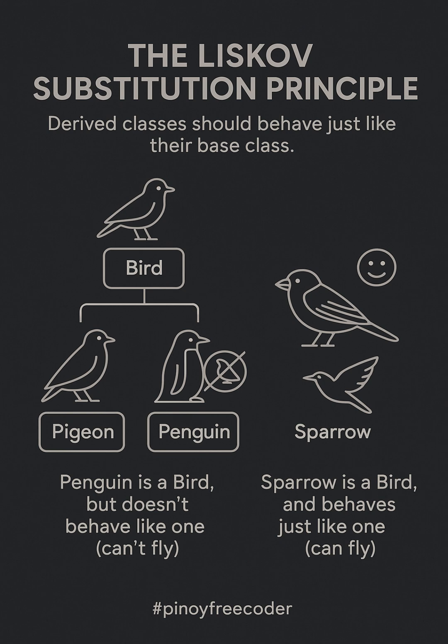Now, let's look at a better example. Imagine we have a sparrow, another type of bird. Like other birds, it can fly. So when we replace the bird with a sparrow, everything works just as expected. The Liskov Substitution Principle simply means that if we replace one thing with another, it should still behave the same way. In our case, when we replace a bird with a sparrow, it still flies, just like every other bird. This principle ensures that the system behaves predictably, so you won't run into surprises when substituting one thing for another.